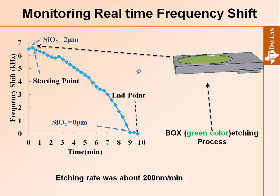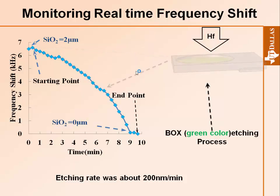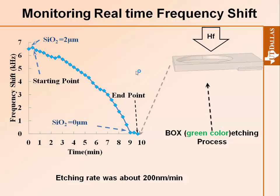The most motivated and impressive section of our experimental work was monitoring the real-time frequency shift. After device fabrication, we released the resonator but did not etch the back oxide. We set up the test and dropped hydrofluoric acid on the back side — the HF attacks the silicon dioxide and gradually etches it over time. As the silicon dioxide is etched away, the frequency shift changes. From this experiment we obtained about 6.5 kHz frequency shift for a 2-micron silicon dioxide thickness on a membrane of about 2 mm.